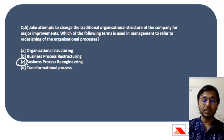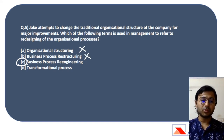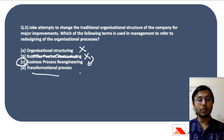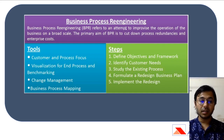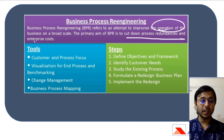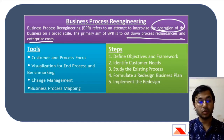The organization identified that its processes and structures are obsolete and asked Jake to lead the entire process of change and recommend what kind of change is required — that activity is called business process reengineering. There is nothing called organizational structuring in this context; business process restructuring does not exist as a term; and transformational process is a fabricated term adapted from transformational leadership. The only valid management concept among the options is business process reengineering. BPR refers to an attempt to improve business operations on a broad scale, cutting process redundancies and enterprise costs.